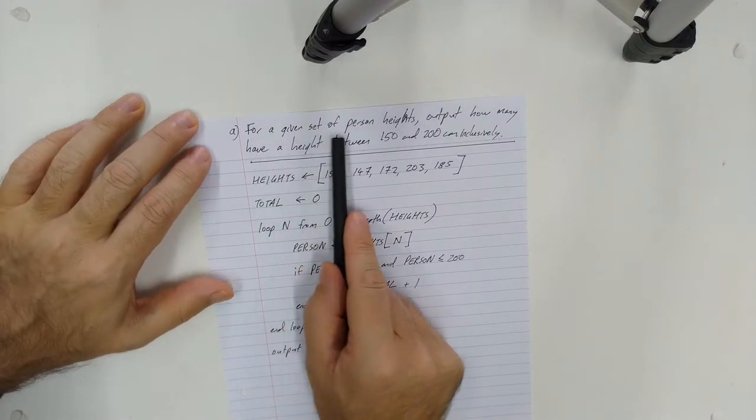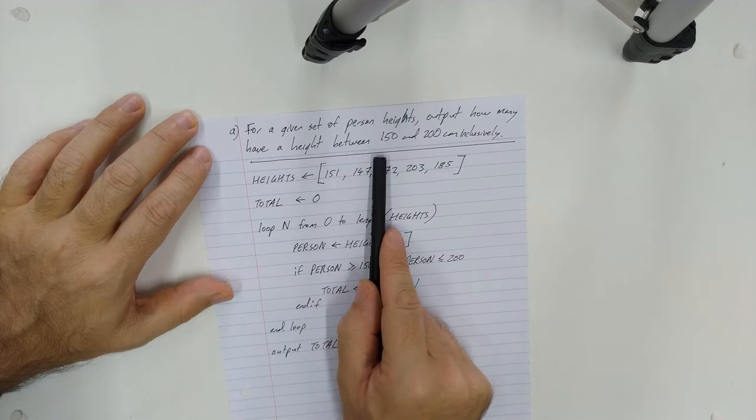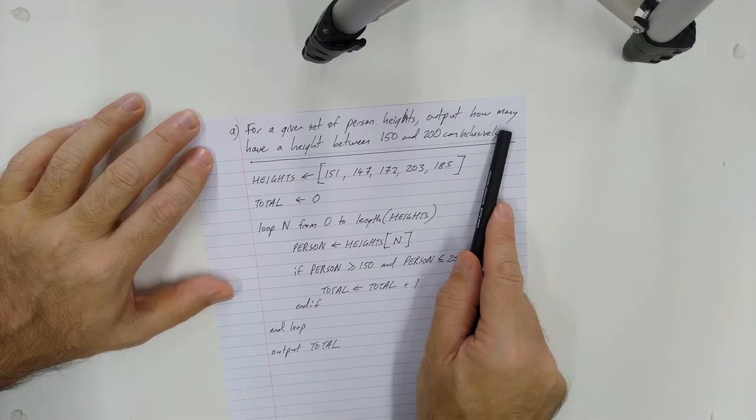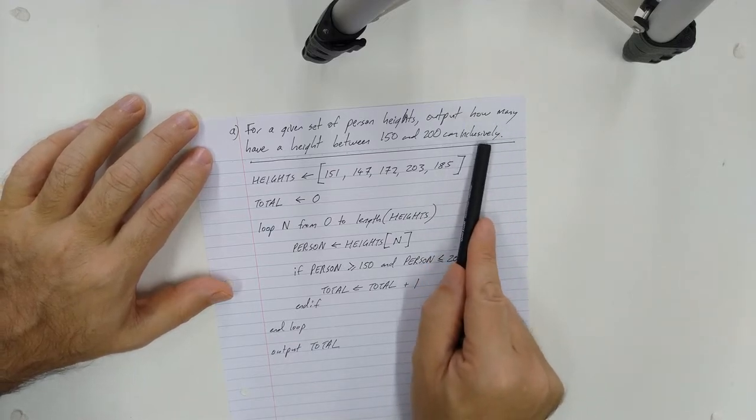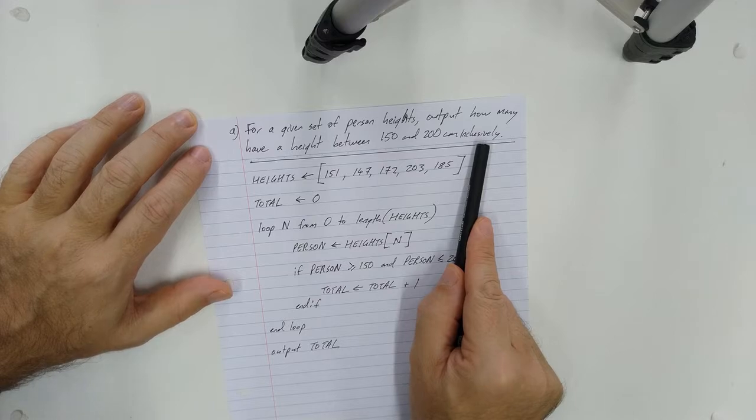For a given set of person heights, output how many have a height between 150 and 200 centimeters inclusively. Now you will need to pay attention to keywords such as this because that will have a bearing on how you write your pseudo code.